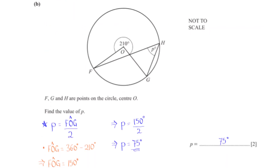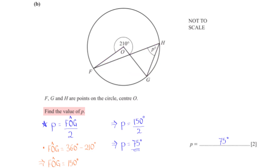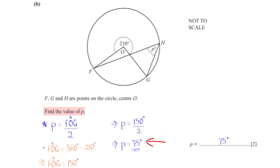F, G, and H are points on the circle with center O. Find the value of P. The angle subtended by chord FG at the center is twice the angle it subtends on the circumference, so P equals angle FOG divided by 2. Since angles around a point equal 360 degrees, angle FOG equals 360 minus 210, which is 150 degrees. Therefore P equals 75 degrees.